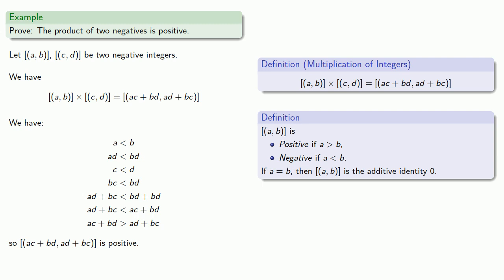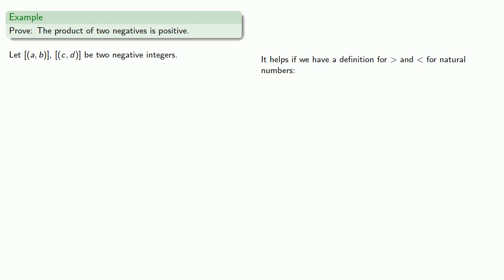Well, remember, definitions are the whole of mathematics, all else is commentary, and our definition relies on this notion of greater than or less than for the natural numbers. And we didn't define it because everybody knows what it is, but maybe we should define it. Here's one possibility.